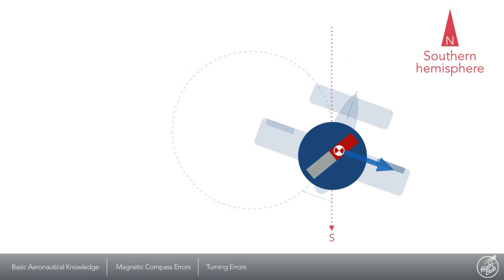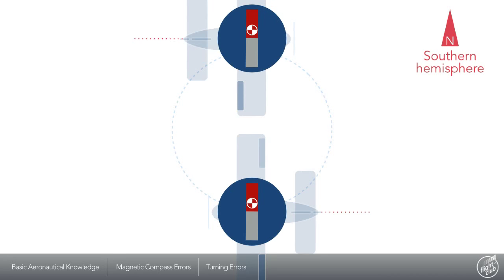Similarly turning through the southerly heading causes this error. Turning through westerly and easterly headings does not cause significant turning errors since the two forces are aligned with the center point and the magnets pivot point.